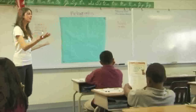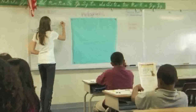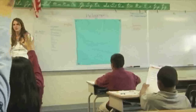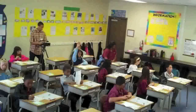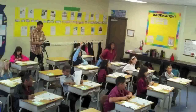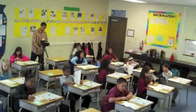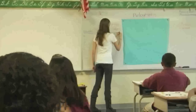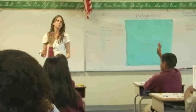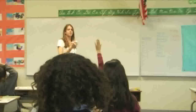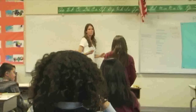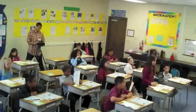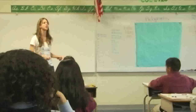Students identify necessary components of a graph. A student names the title as important. Another student says labels are needed. Veronica adds that a scale is needed. The teacher asks someone to explain what scale means. Katherine explains: 'It's like, how many is each little picture?' The teacher affirms this as a great explanation.